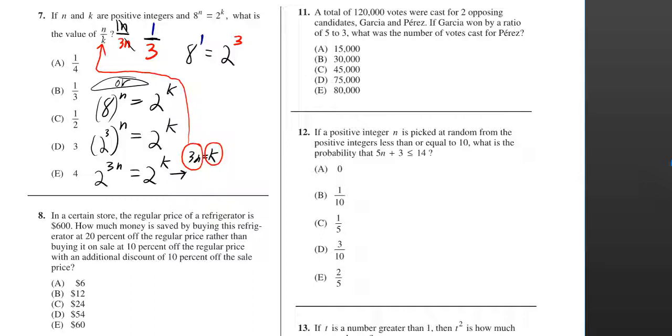So if I'm trying to find the value of n over k, I can replace the k by a 3n. I'll still leave the n up top, but then the two n's will cancel or just leave you a 1 upstairs. So either way you get 1 over 3.